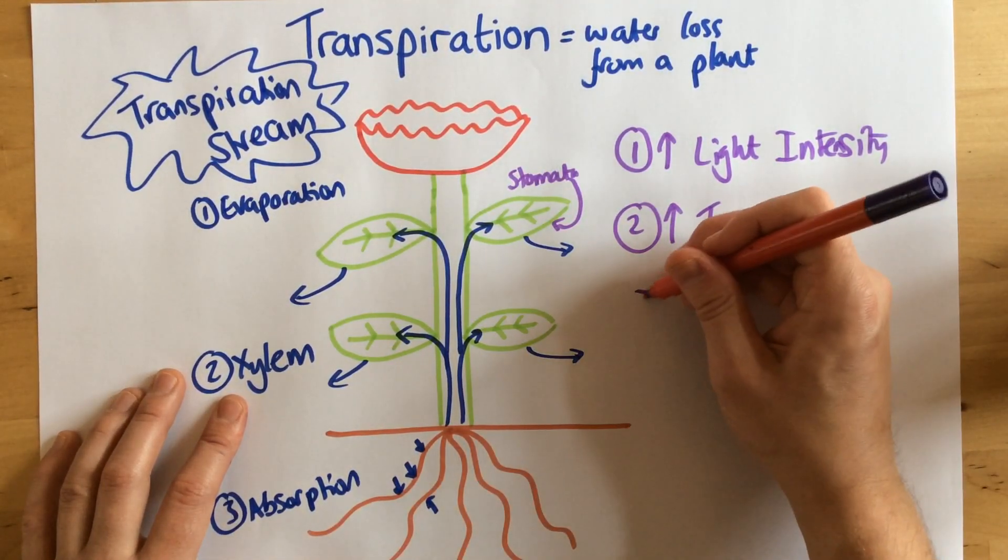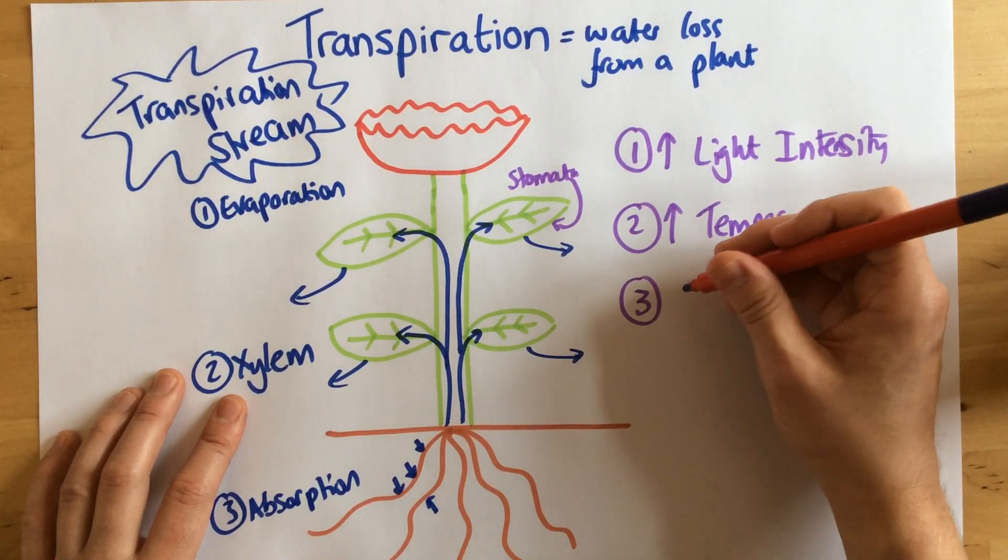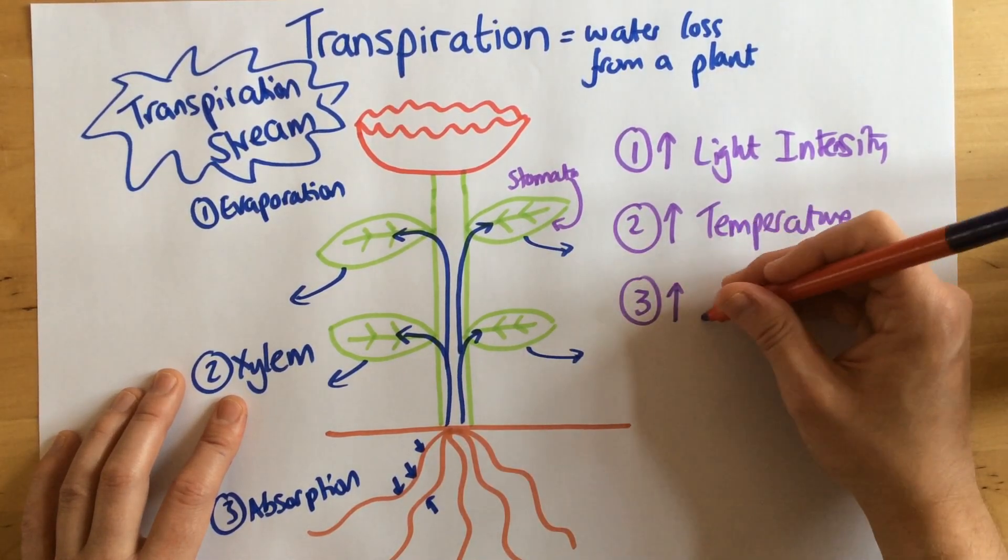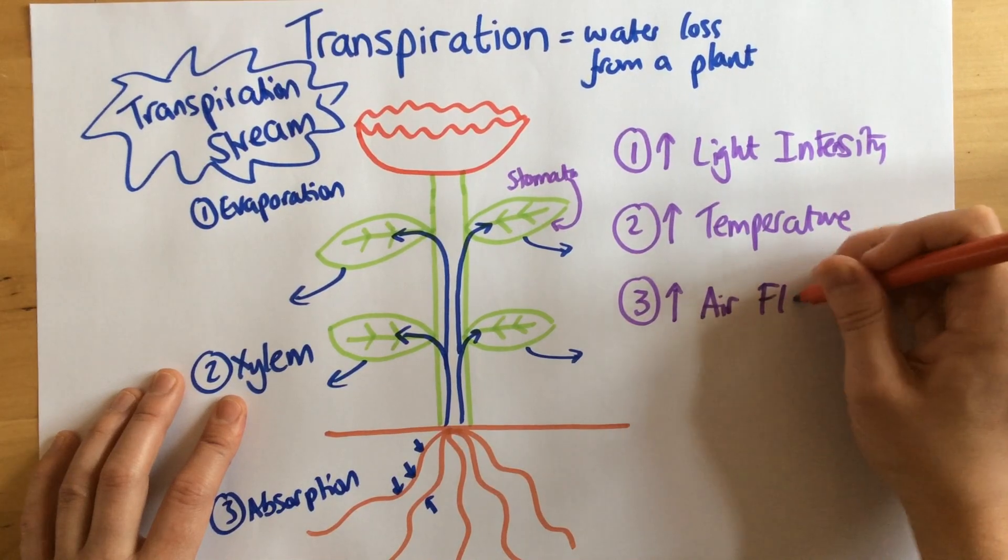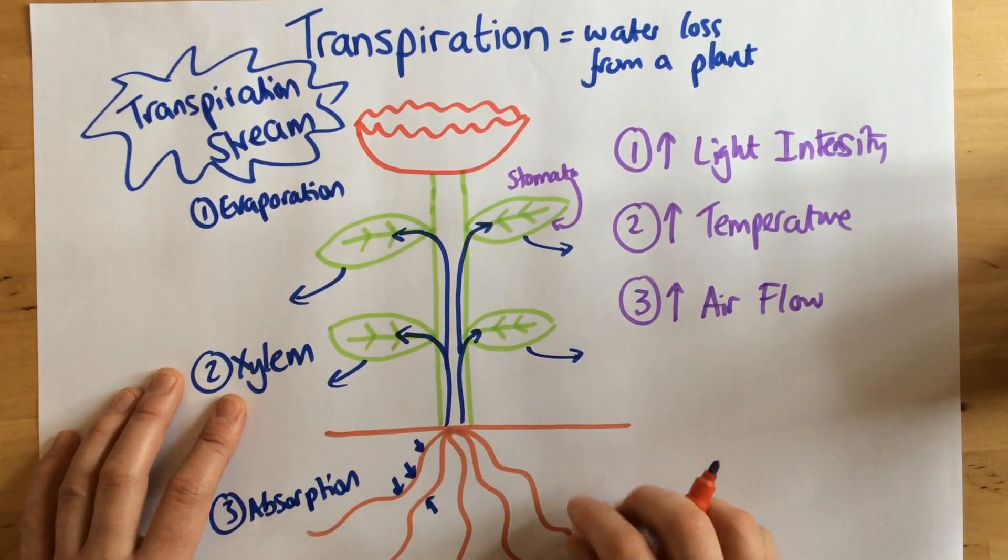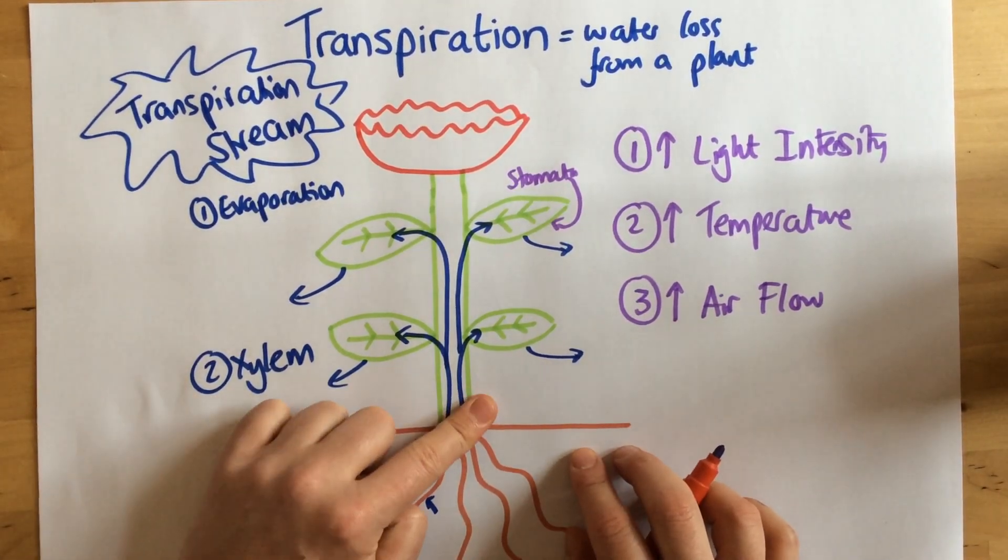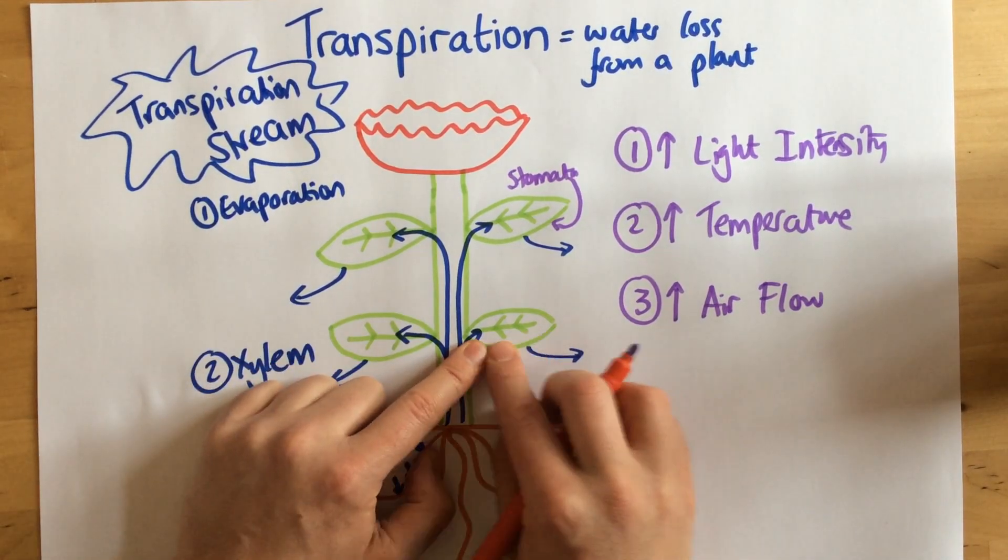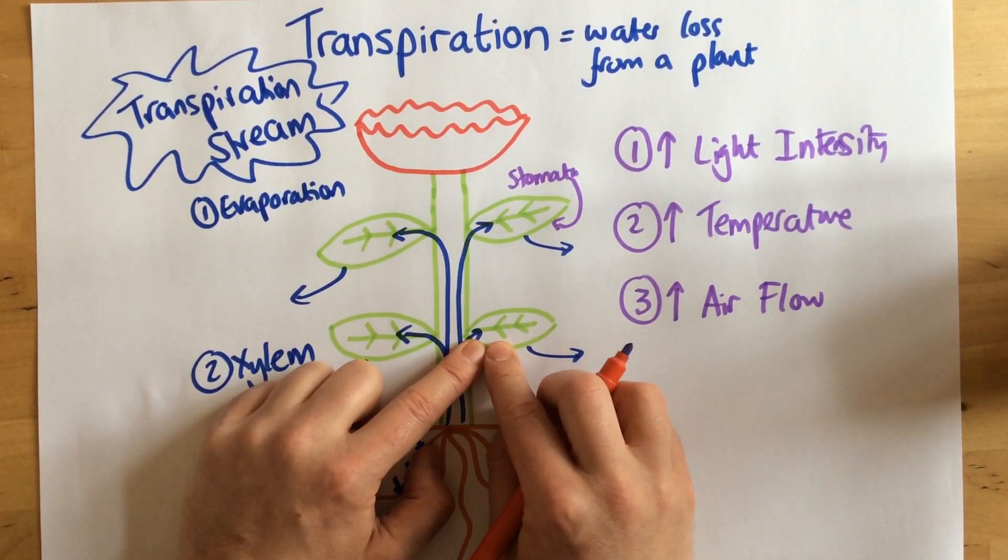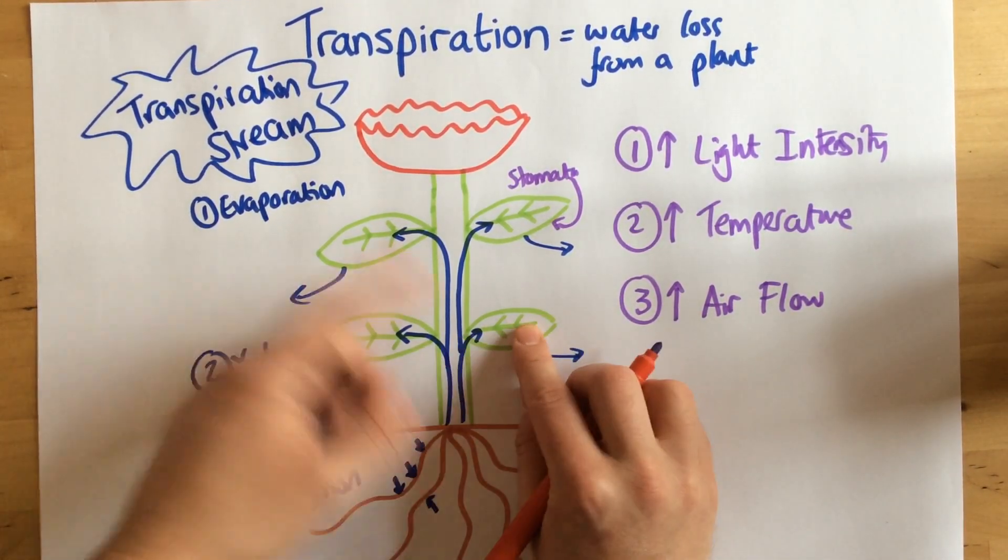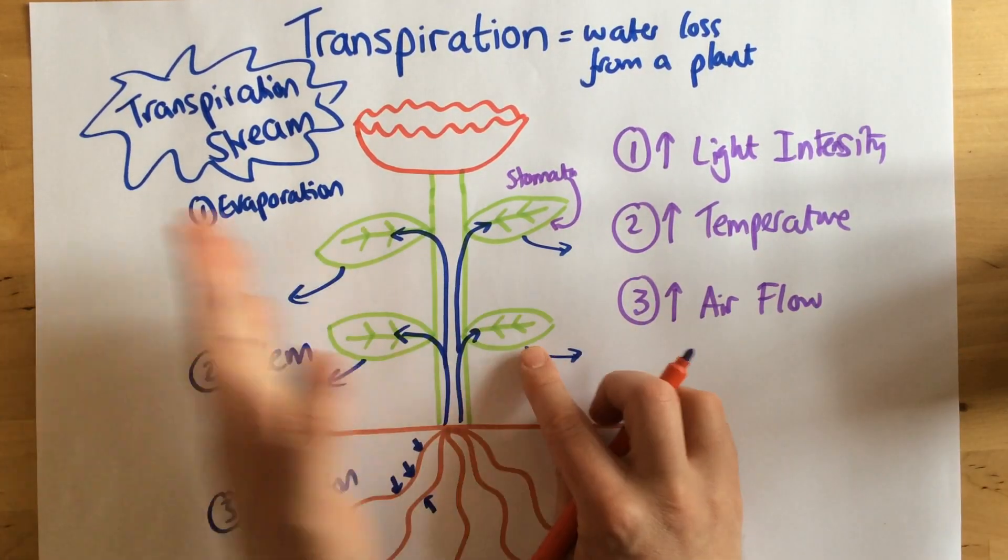Now the final one we need to talk about is having a high degree of airflow. For example, it being quite windy. Now the reason for this is, if there's water vapor surrounding the leaf, we want that cleared out of the way as much as possible.